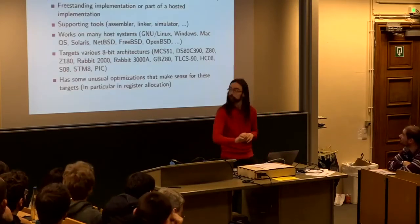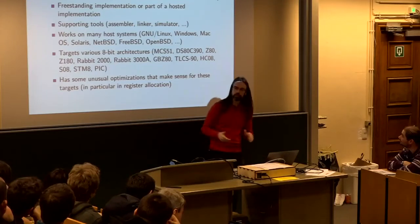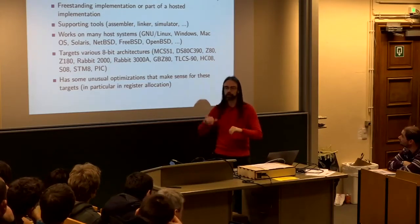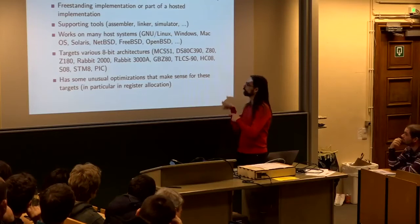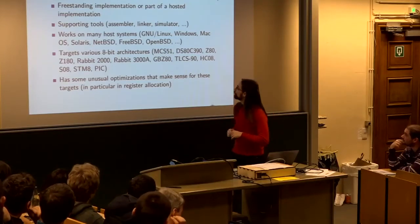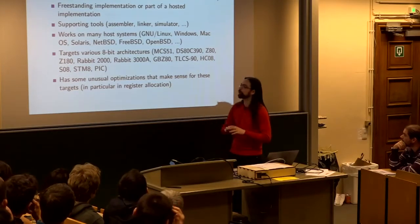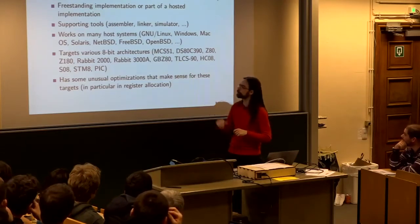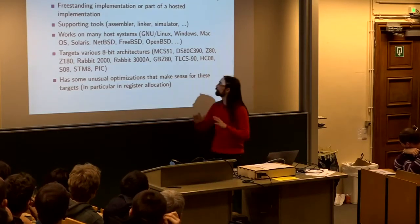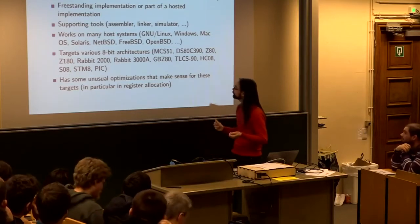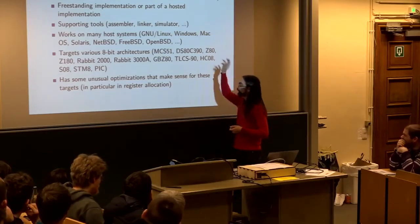Let's talk about the Small Device C Compiler. It's a standard C compiler that supports current standards such as ISO C11, not perfectly — there are a few gaps, for example we don't support double, only float. But most of the stuff is there. On these systems, you typically use it as a freestanding implementation, so the standard library won't provide file systems or similar. They have supporting tools such as the Z80 simulator for target architectures. It works on many host systems and targets a lot of 8-bit architectures, and the Z80 target is what we want for these systems.